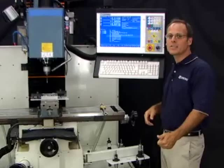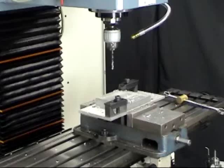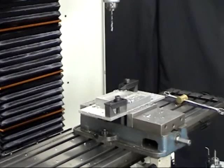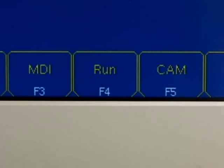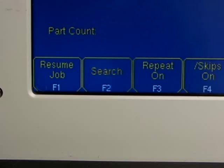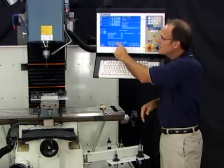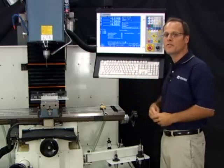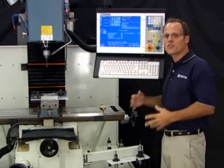I can hit tool check. Tool check is always going to retract the Z straight up. Now to actually start back where we left off I can go into the run screen. Hit the search button. And right here it says enter the search line or block number.